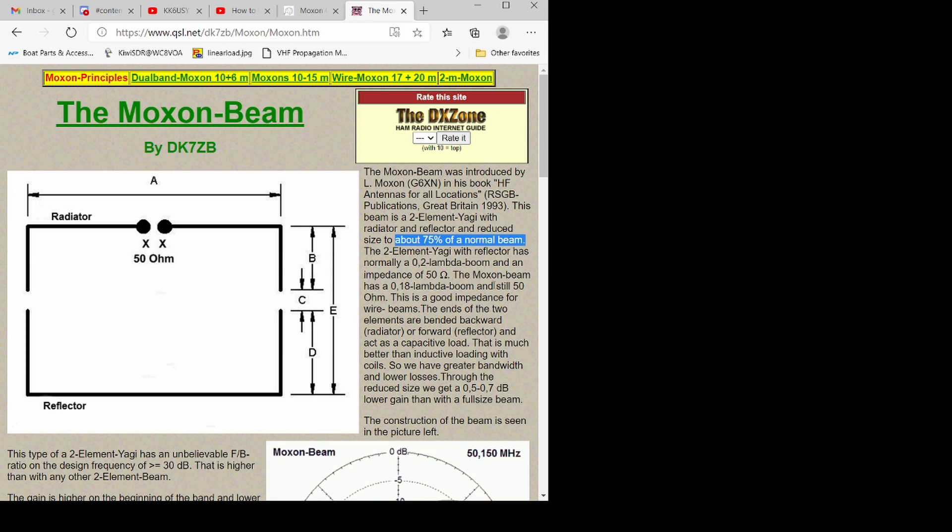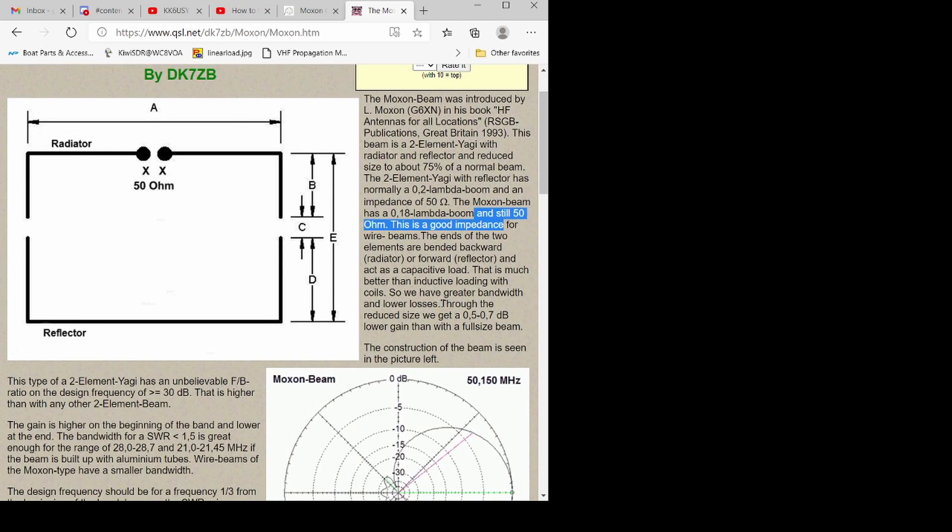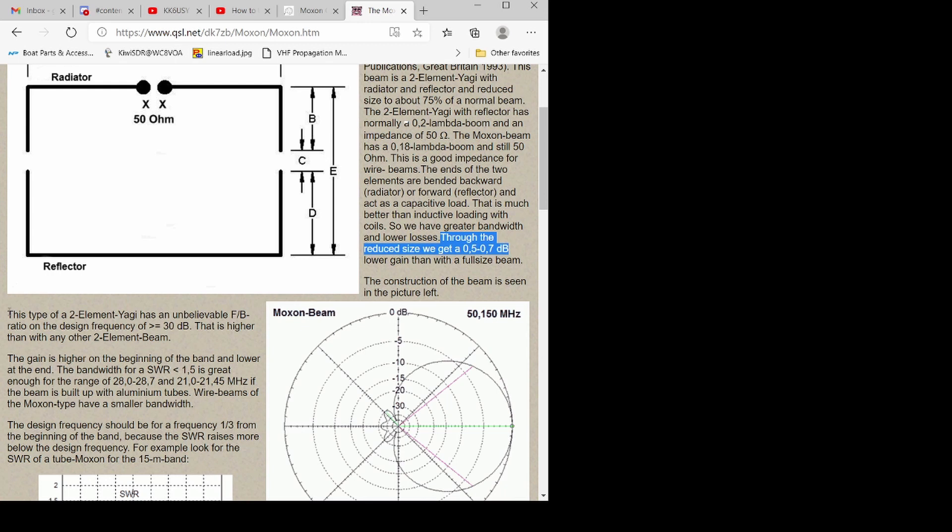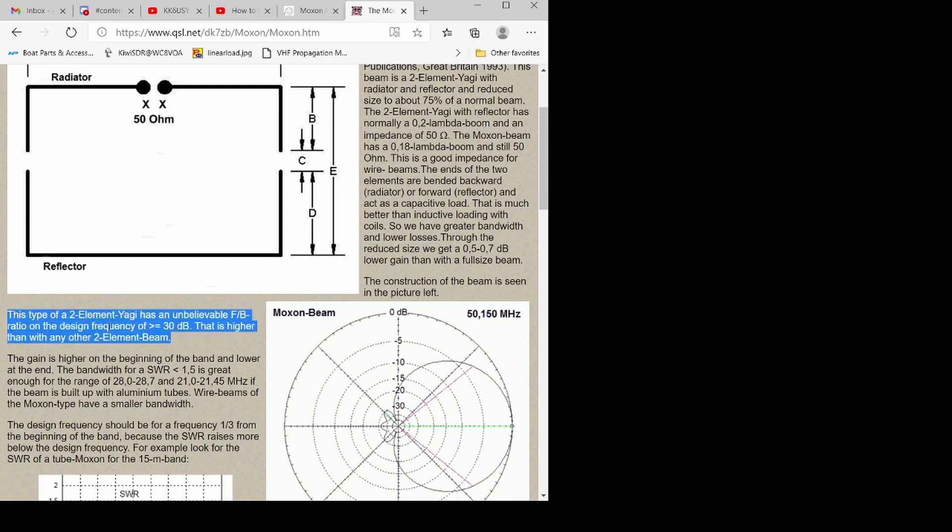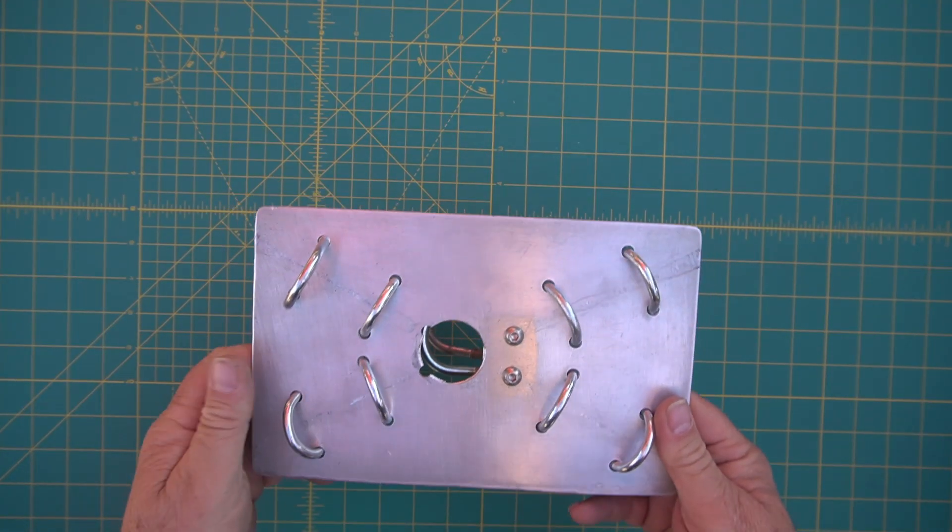It's about 75% the size of a normal full-size two element beam, with a 50 ohm impedance match, so it's just like a dipole basically. Through the reduced size, you lose about 0.5 to 0.7 dB of gain compared to a full-size beam, but you end up with front to back of greater or equal to 30 dB, which is higher than a regular two element Yagi.